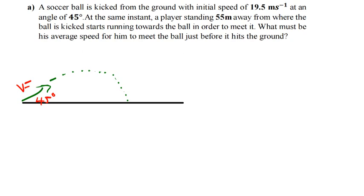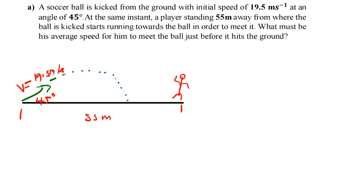We are told that the distance from where the ball is kicked to where the person is standing is 55 meters. The person is standing at one point, and the ball will land at another point. The question asks what average speed is needed for the person to reach the ball just before it hits the ground. I'll call the distance the person needs to run as delta-X.